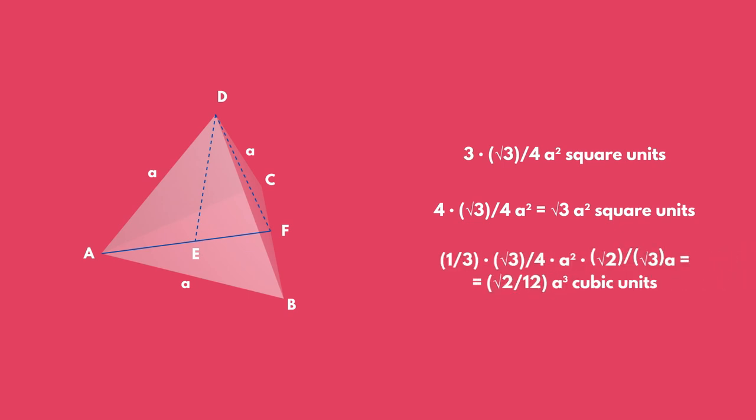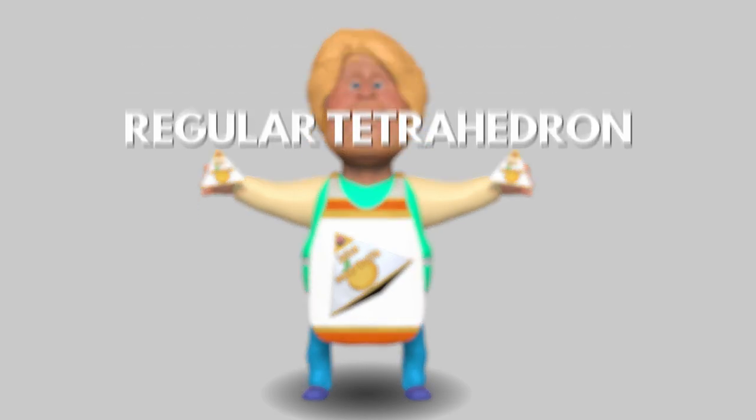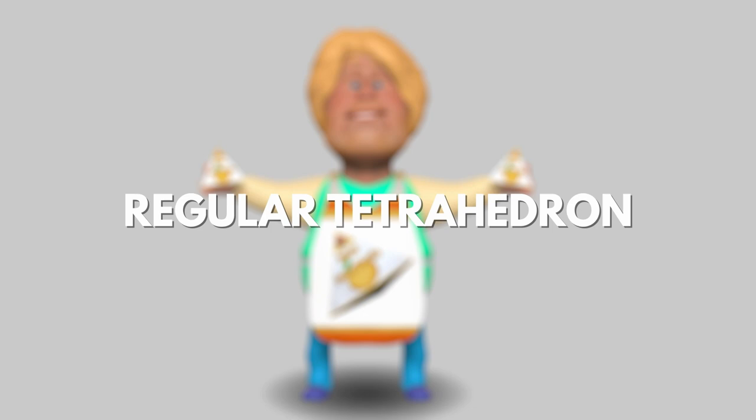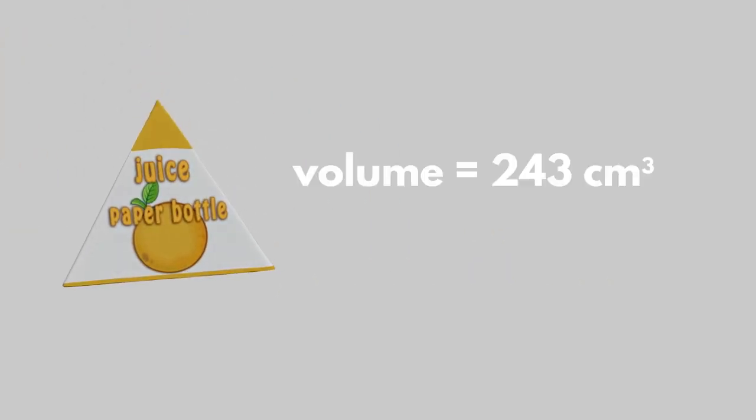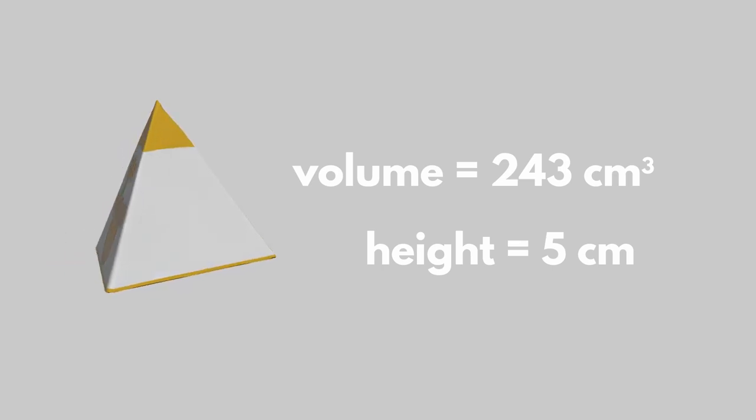Let's see how we can use all of the notions we learned in a real life situation. You have a juice producer and after asking your customers what box shape they want, you discover the most popular choice was a regular tetrahedron. You need to know how much material you will use for each carton box. You want to fill each box with 243 cubic centimeters of juice and the height of the box should be 5 centimeters. How much carton will you use for each box?